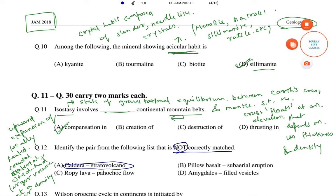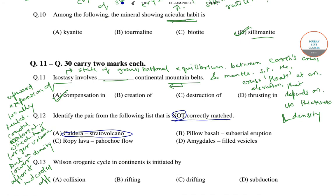Option number B — pillar basalt and subaerial eruption — is not a correct match. So the correct answer of this question is option number B.